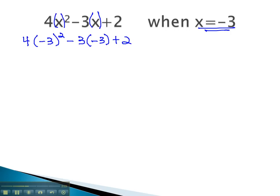Once I've done that, it's just an order of operations problem. First, we know to do exponents. 4 times negative 3 squared is 9, minus 3 times negative 3 plus 2.